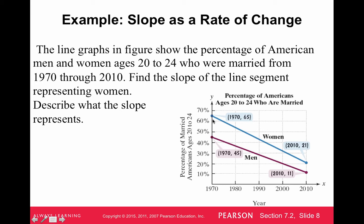In 1970, 65% of women ages 20 to 24 were married. And in 2010, only 21% of women ages 20 to 24 were married. So clearly there's a decrease and we want to know what percent per year was this decreasing. That's really the point.